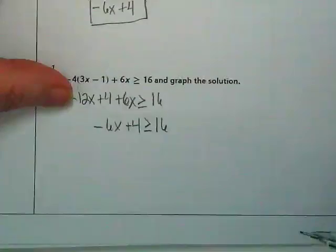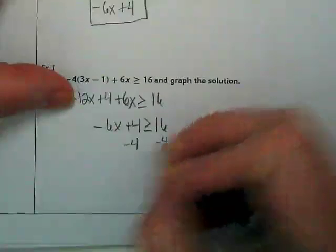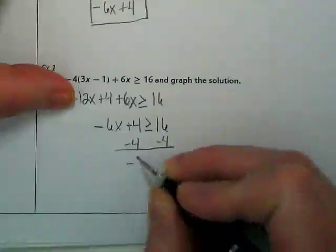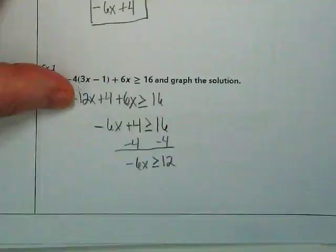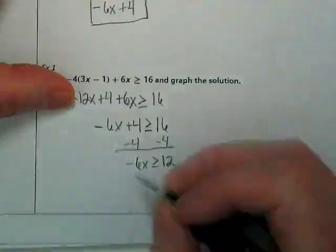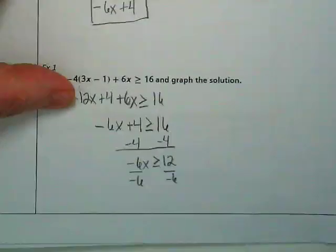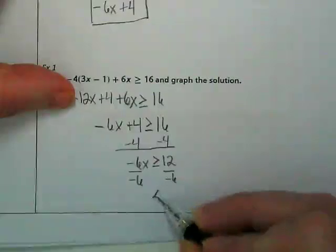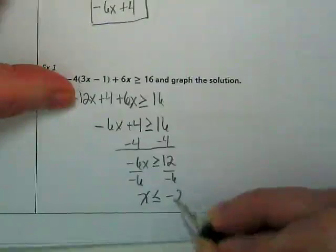What should be our next step? Subtract the 4. We get negative 6x is greater than or equal to 12. We almost have the variable isolated. Divided by negative 6. And when I do division of a negative, what do I do with my symbol? So x is less than or equal to negative 2.